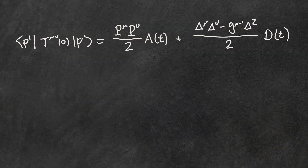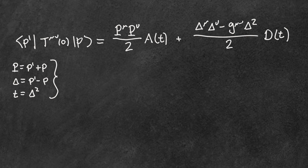What you're seeing is the matrix element of the energy-momentum tensor — a particle coming in with four-momentum P, leaving with momentum P prime — and that is parameterized in terms of two form factors called A and the D-term, which are functions of the four-momentum transfer squared, Δ² or T depending on what you want to call it.